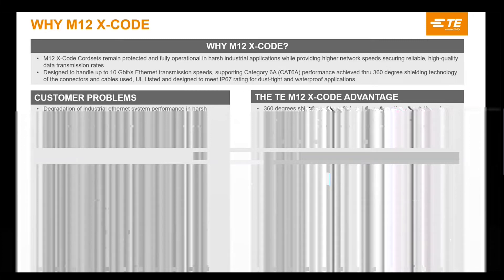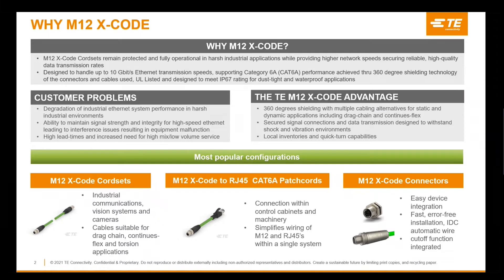As such, TE's M12 Xcode cord sets protect customers from facing costly production downtime due to degradation of system performance, while providing multiple cabling solutions and options, and secured signal connections designed to withstand shock and vibration environments. A variety of connector choices and styles are available, including straight and right-angle cord sets and M12 to RJ45 cord sets in single-ended and double-ended configurations.